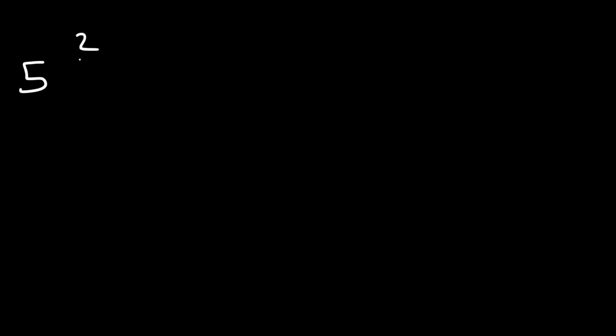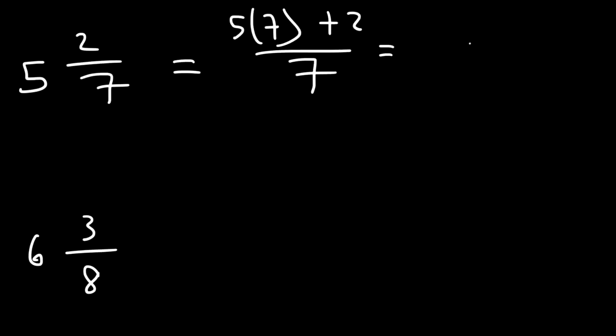Go ahead and try these two examples. Convert these mixed numbers into improper fractions. The first one is going to be 5 times 7 plus 2 divided by 7. 5 times 7 is 35, 35 plus 2 is 37, so the answer for that example is 37 over 7.